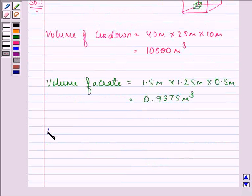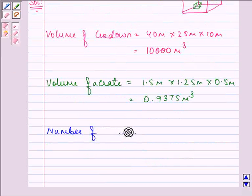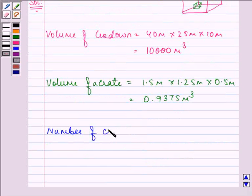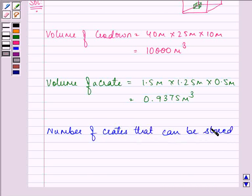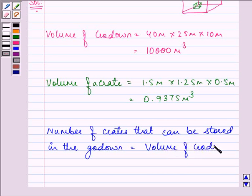To find out the number of crates that can be stored into the godown is equal to volume of godown divided by volume of a crate.